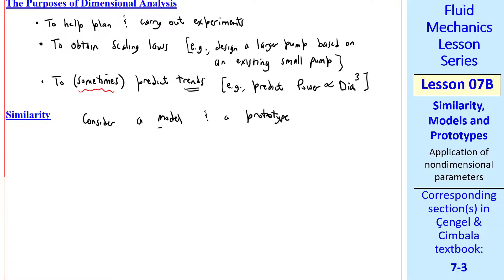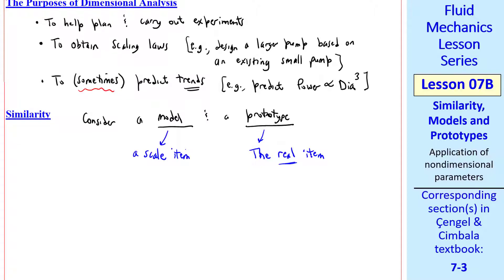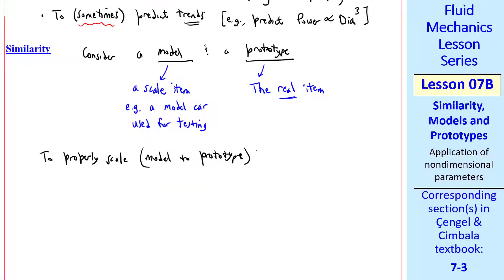Now I want to talk about similarity. Let's consider a model and a prototype. A prototype is the real item, for example, an actual car or an airplane or a submarine. Whereas a model is a scale item, for example, a model car used for testing. To properly scale from model to prototype, we must have complete similarity, which we'll also call dynamic similarity.